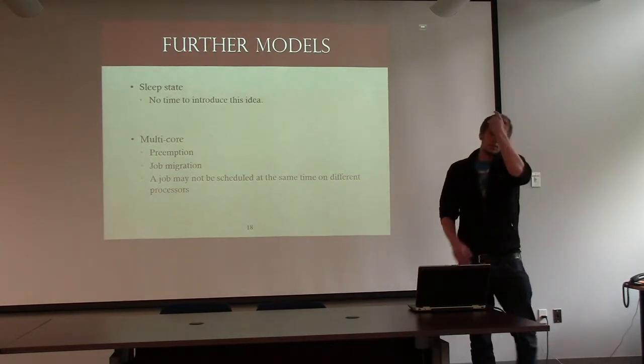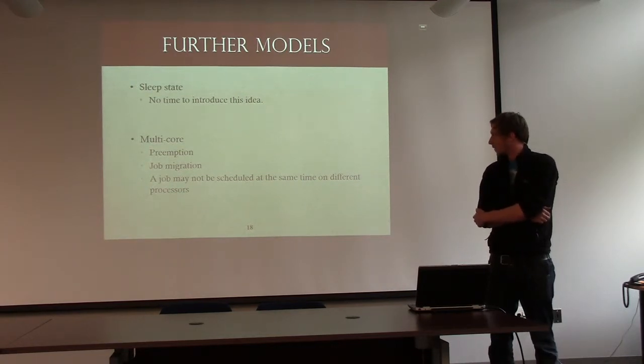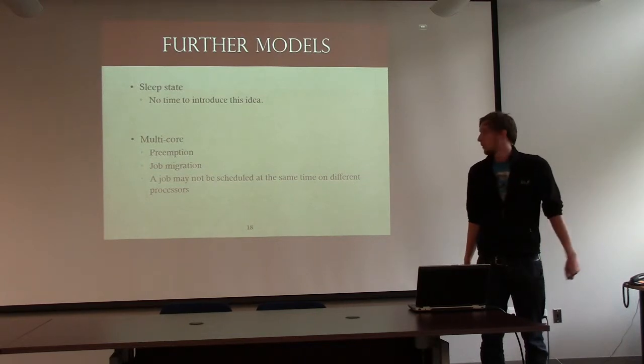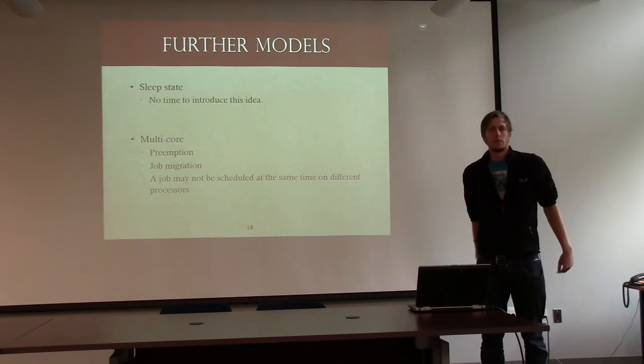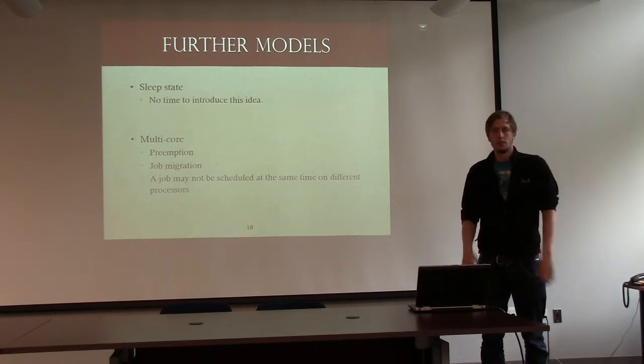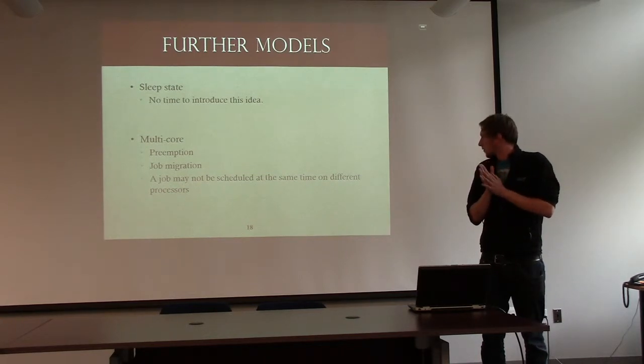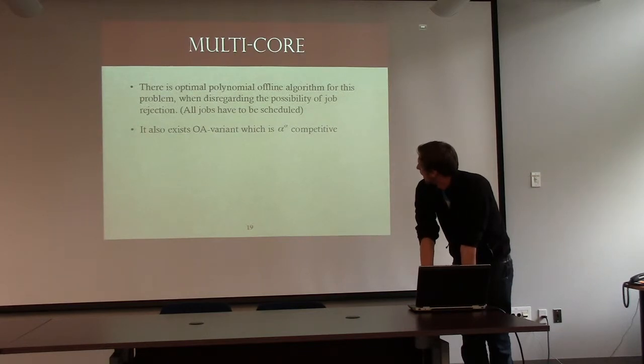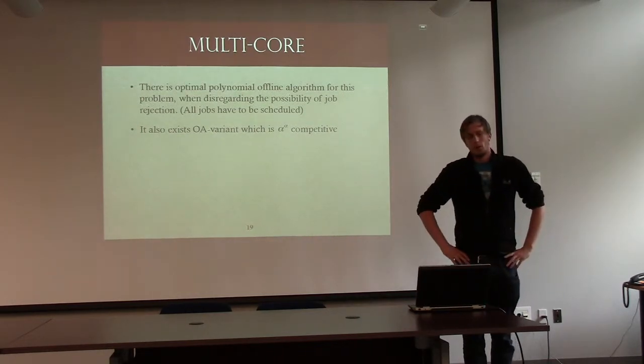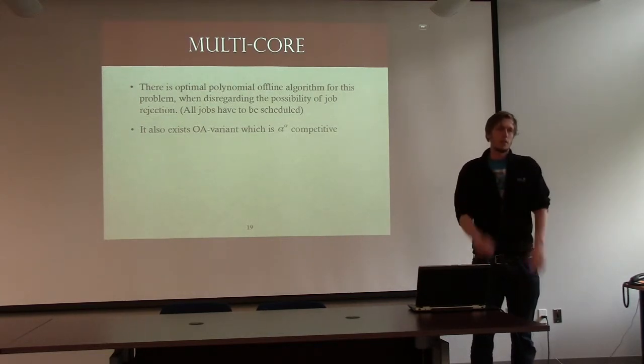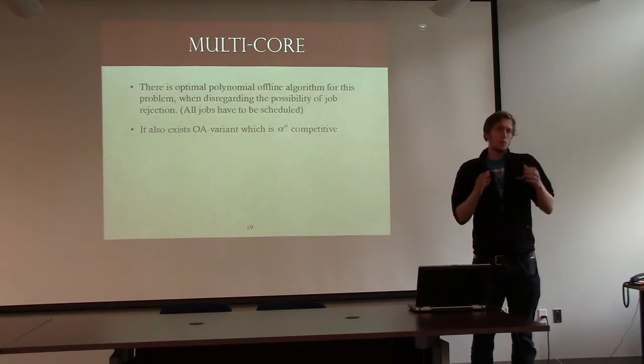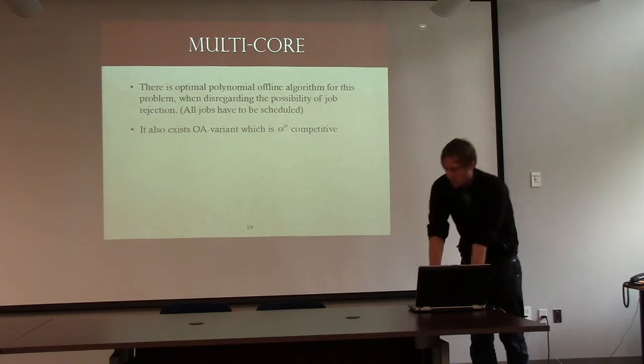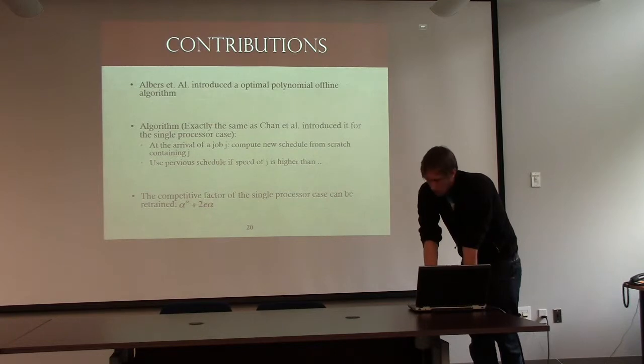And, there are other models out there. A sleep state model, which we also consider. There's no time for that. And, a multi-core processor. And, here we allow preemption as much as we want. So, you can stop a job, put it somewhere, and later continue the job. You also allow job migration. You have several processors, right? And, you're allowed to migrate it from one processor to the other one instantaneously, without paying anything for that. But you have this restriction that you can't schedule one job on different machines at the same time. And, I've also proved in my bachelor thesis that this is also alpha to the power of alpha competitive. Which is quite surprising, because that's the same competitive factor for the single machine. Even though now you have more processors. You could think that it's harder to find a really good solution, because the optimal algorithm just has more possibilities. But, it's the same.